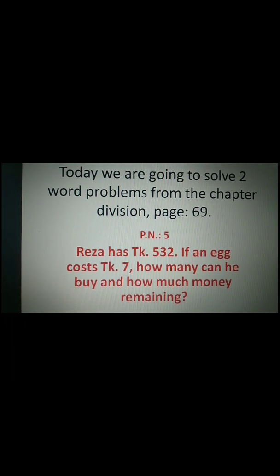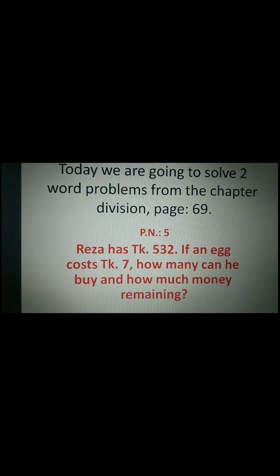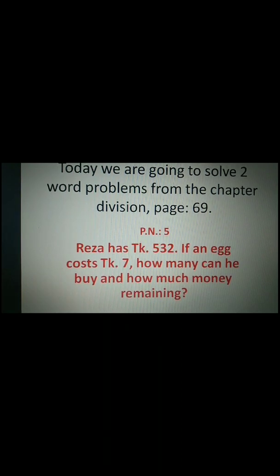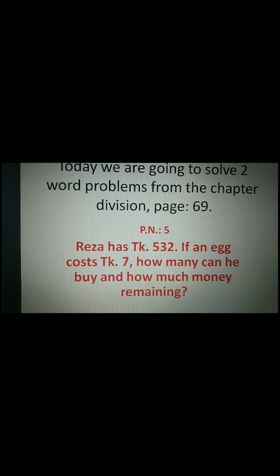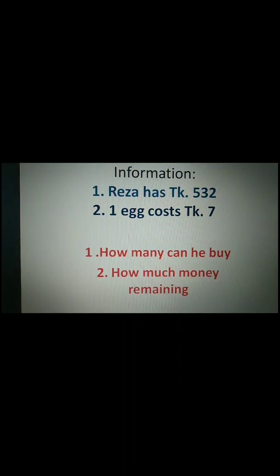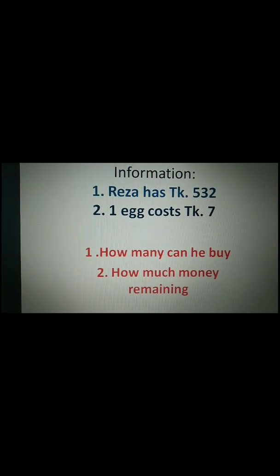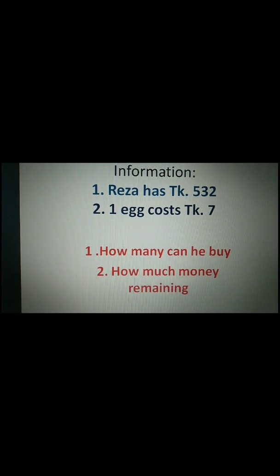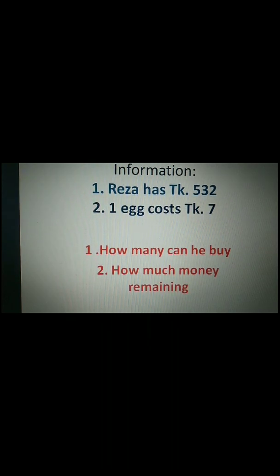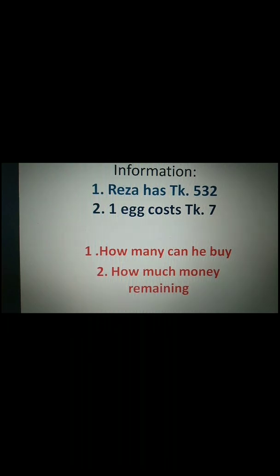Today we are going to solve two word problems from page number 69. First we solve problem number five. The question says: Rizal has taka 532; if an egg costs taka 7, how many eggs can he buy and how much money remains? From the question we get two pieces of information: Rizal has taka 532, and one egg costs taka 7. We have to find out how many eggs he can buy and how much money remains.